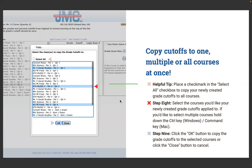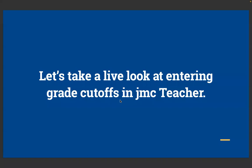Click the Copy button and select individually the courses you'd like to copy cutoffs to, or place a checkmark in the Select All checkbox to select all your courses. On a Windows computer, hold down the Control key while clicking individual courses; on a Mac, use the Command key to select multiple courses. Step nine: click the OK button to copy the grade cutoffs to the selected courses, or click Close to cancel.